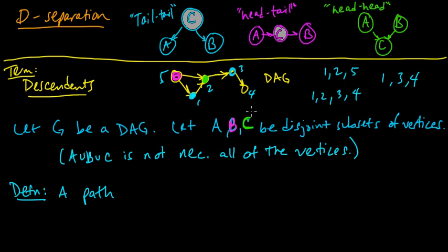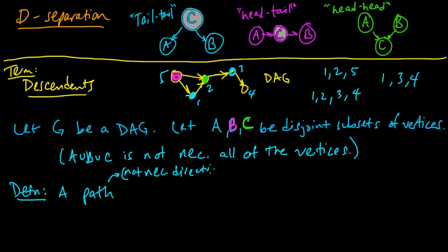Note that since 1, 2, 5 is a path, we're allowing these paths to be not necessarily directed — in the sense that we're not necessarily going in the direction of the edges along this path.